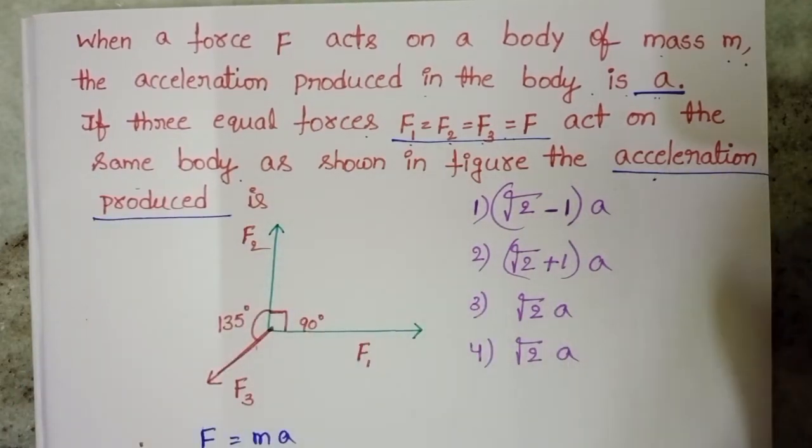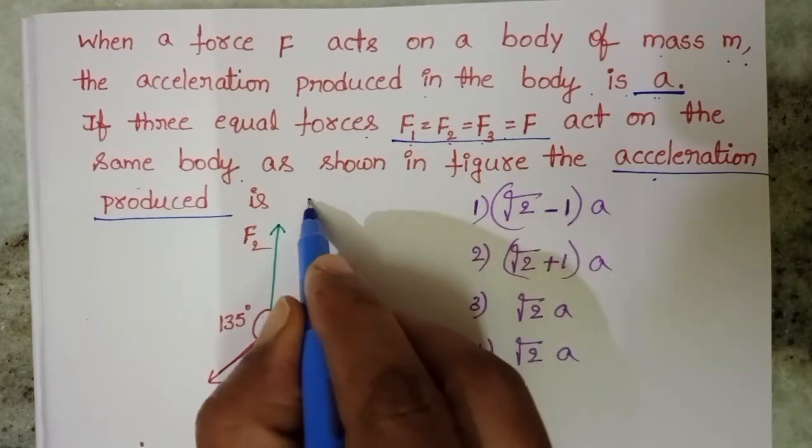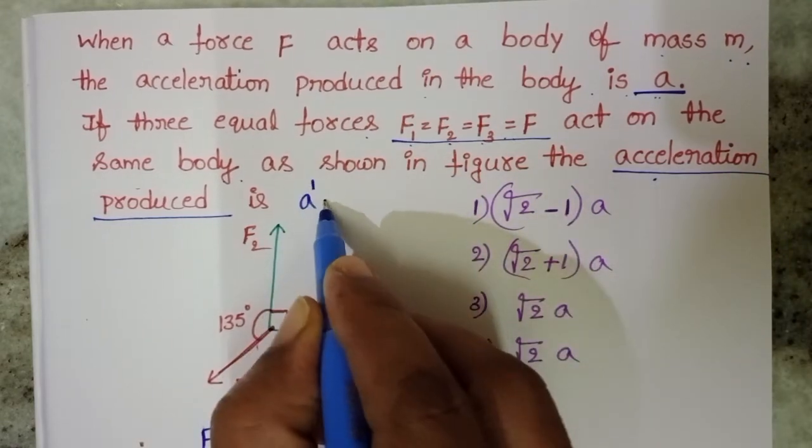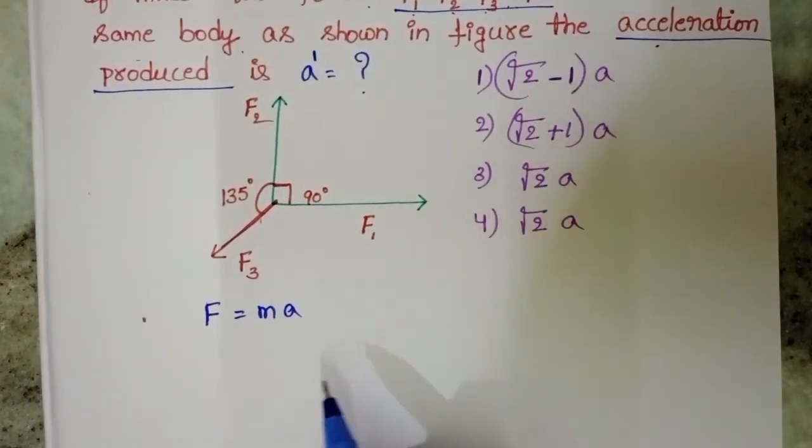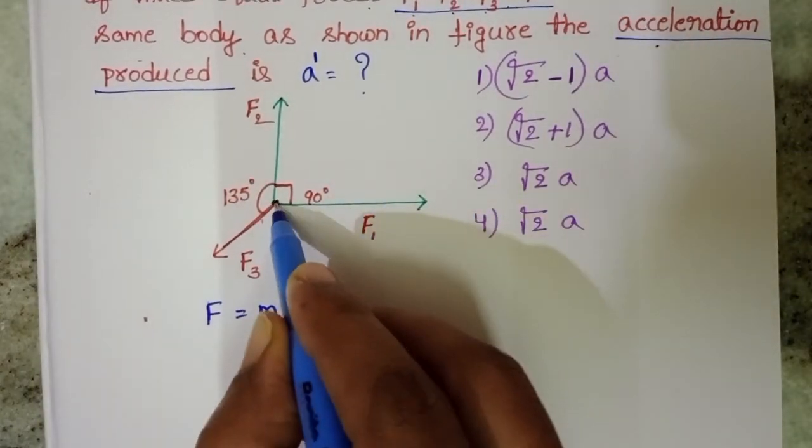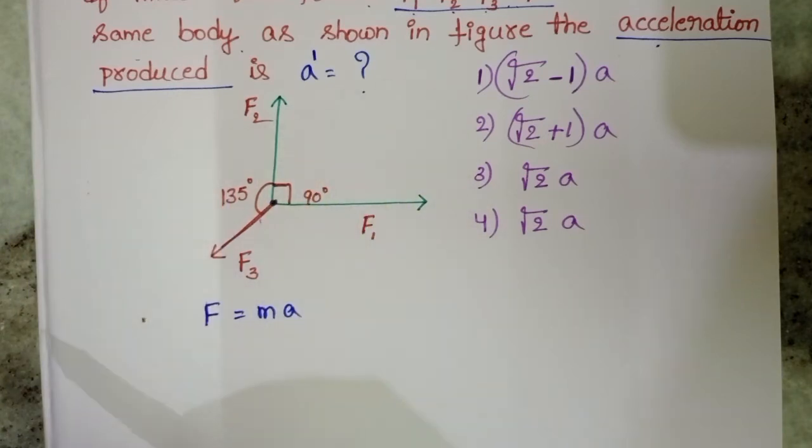Then the acceleration produced is unknown. So in the second case, we don't know the acceleration. Let it be A dash. In this question we have to find out A dash. So observe the diagram. A particle of mass M has three forces acting on the particle.